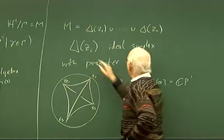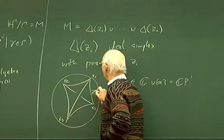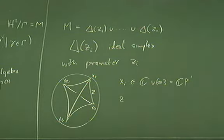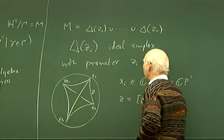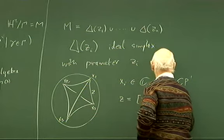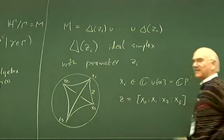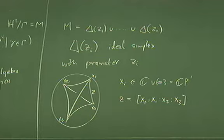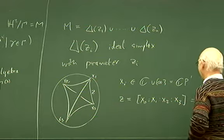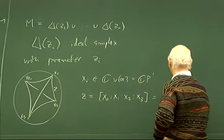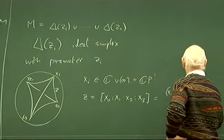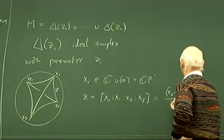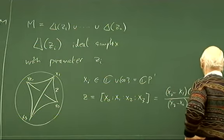The parameter Z associated to this simplex is actually associated to the simplex plus a choice of edge. It's defined as the cross ratio of these four numbers — a standard concept from projective geometry. It's the only invariant of four points on a projective line. It's defined as (X₂ − X₁)(X₃ − X₀) / ((X₂ − X₀)(X₃ − X₁)).